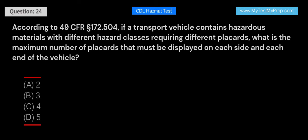According to 49 CFR Section 172.504, if a transport vehicle contains hazardous materials with different hazard classes requiring different placards, what is the maximum number of placards that must be displayed on each side and each end of the vehicle? A. 2. B. 3. C. 4. D. 5. Answer: C. According to 49 CFR Section 172.504, a maximum of four placards must be displayed on each side and each end of the vehicle. This ensures that the most significant hazards are communicated while maintaining a clear and manageable display of information.